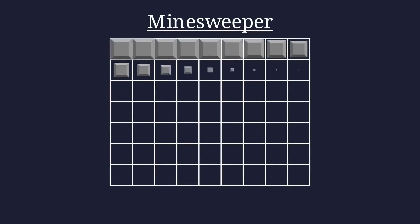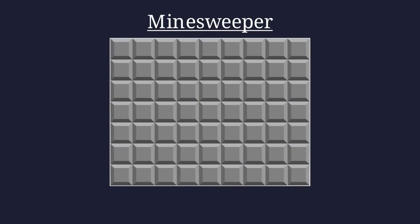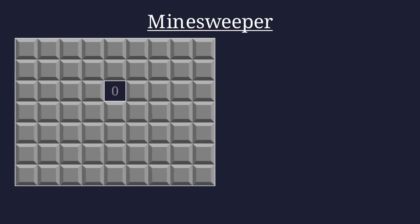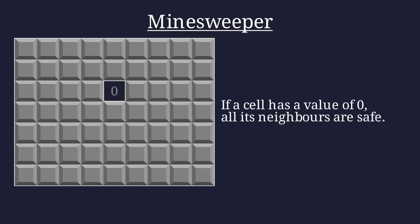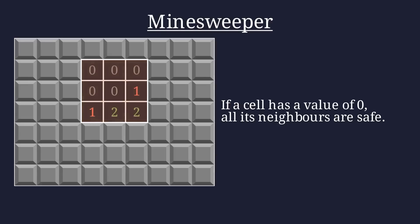To familiarize ourselves with it, let's try a simple game. As we can see, the value of this cell is zero, meaning all of its neighbors must be safe. Therefore, we can step all of its neighbors with no concern.